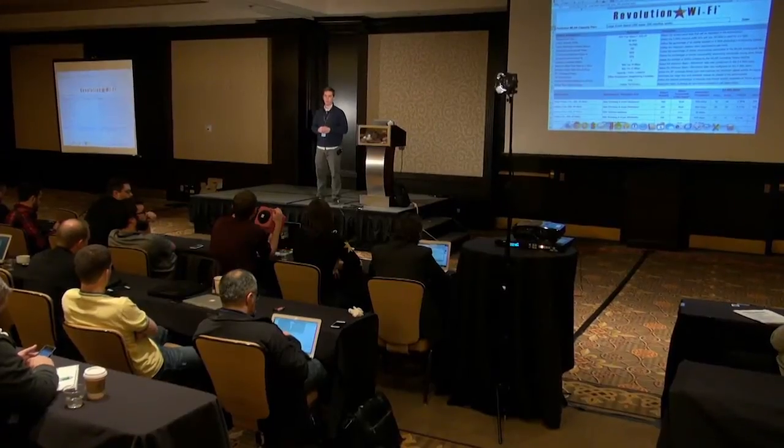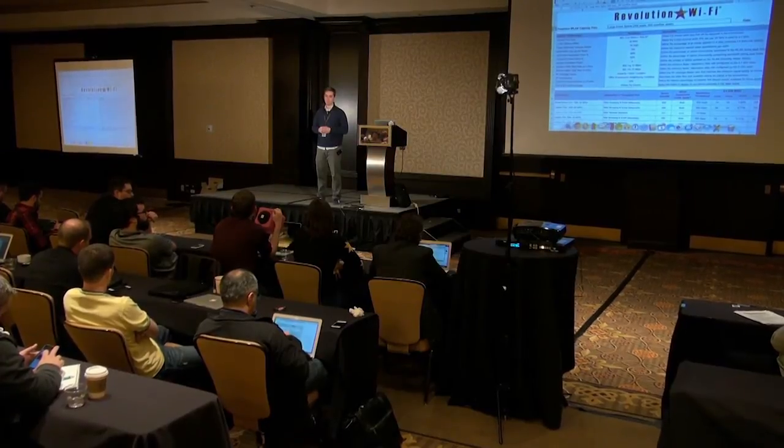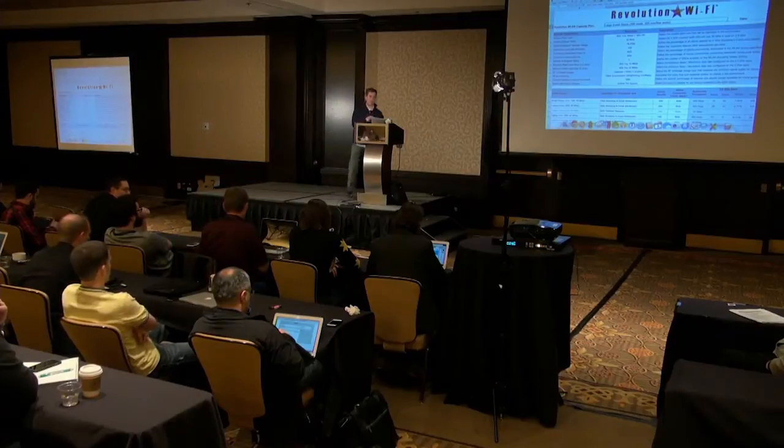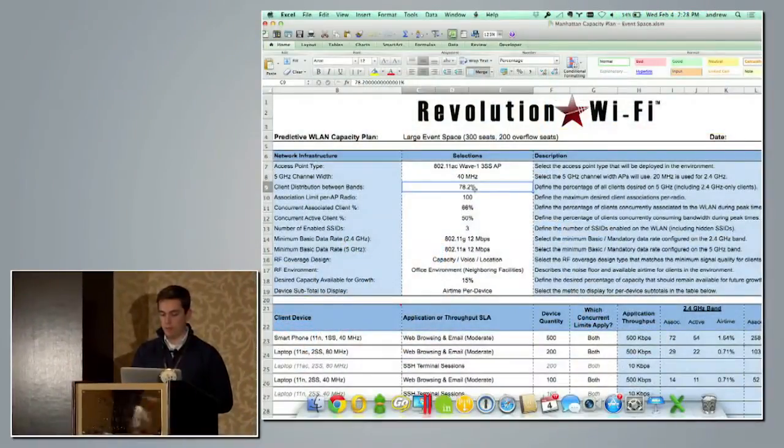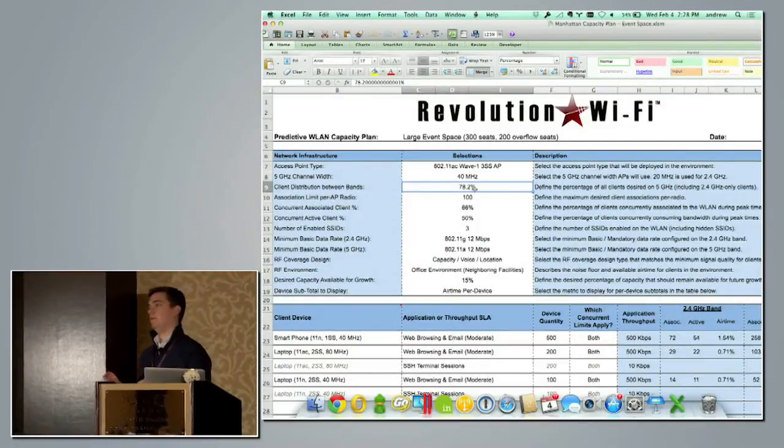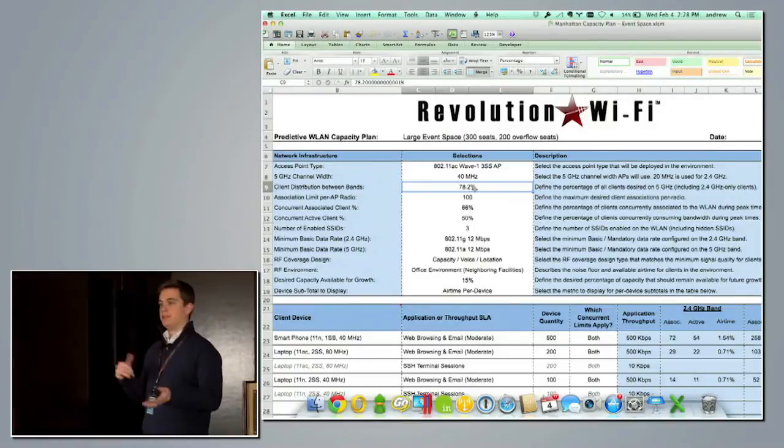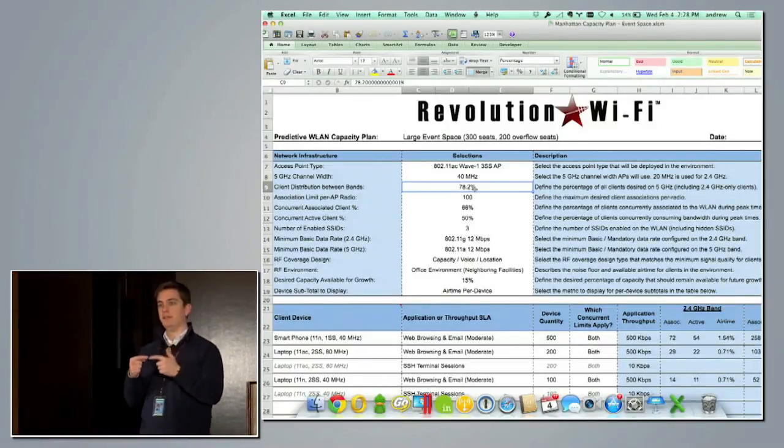An audience member asks: do you ever see this capacity planner rolling into something that dovetails into the switch side? Absolutely — in the capacity plan I try to estimate throughput out of an individual AP as well as total aggregate throughput for a space. That's why I broke the floor up into two spaces — I needed two different capacity plans: one for the office environment and one for the event space.